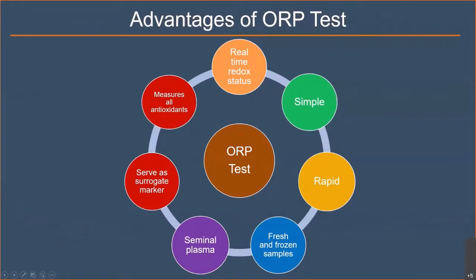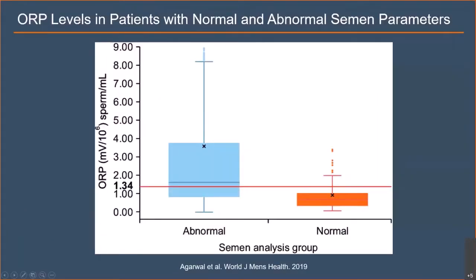The advantages of the ORP test are that it is a real-time measure of redox status, simple and rapid, can be measured in fresh and frozen samples as well as in seminal plasma, and also serves as a surrogate measure capturing all antioxidants present in a given sample. This slide shows the distribution of normal and abnormal semen parameters and the cutoff of 1.34, where all normal samples are below the cutoff while patient samples with abnormal semen parameters show higher ORP levels.